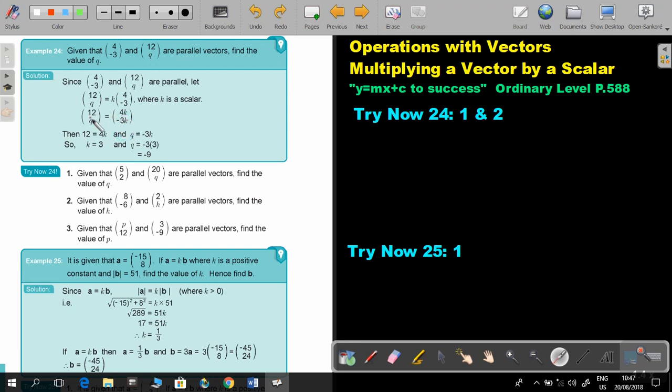And then I'm going to say, but 12 is then equal to 4K, and Q is equal to negative 3K. Then we're going to solve this equation to find K, substitute it in there, and that's how we find the value of Q. I want you to stop the video and do for me, try now 24, number 1 and 2. You can continue the video as soon as you are finished.